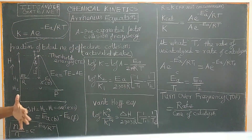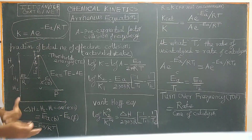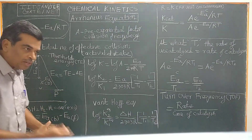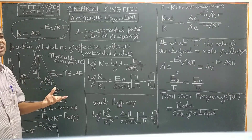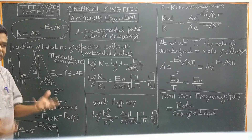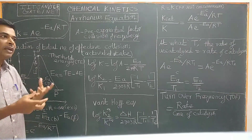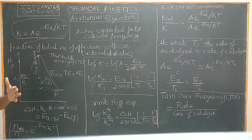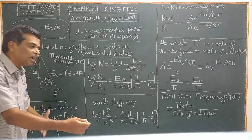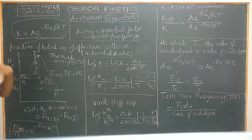If you use a catalyst, it is used to increase the rate of both the forward and backward reactions. The characteristics of a catalyst are: it is always regenerated at the end of the reaction, it is used in small quantities, and it accelerates both the forward and reverse reactions in the same way. Therefore, the equilibrium constant is not affected by the presence of a catalyst.